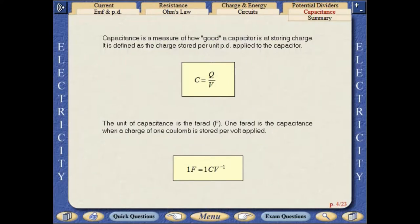Capacitance is a measure of how good a capacitor is at storing charge. It is defined as the charge stored per unit PD applied to the capacitor. The unit of capacitance is the farad. One farad is the capacitance when a charge of one coulomb is stored per volt applied.